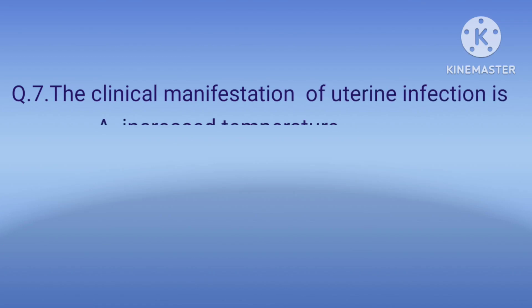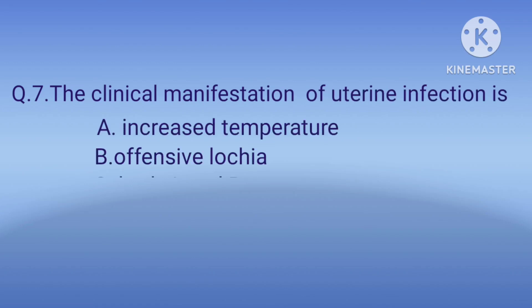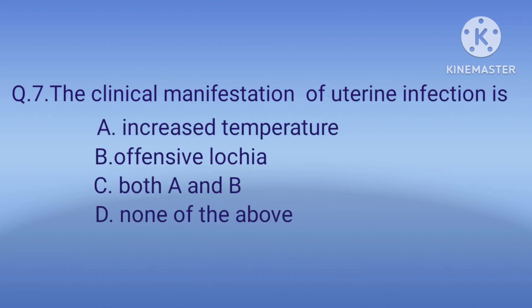Question 7: The clinical manifestation of uterine infection is — option A: increased temperature, option B: offensive lochia, option C: both A and B, option D: none of the above. The correct option is C, both A and B.